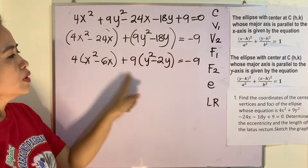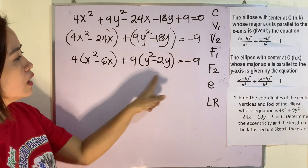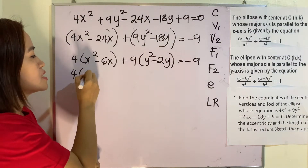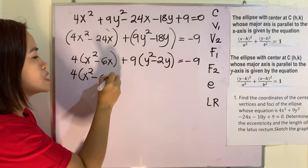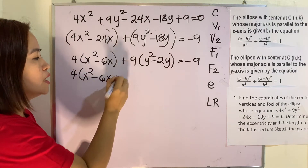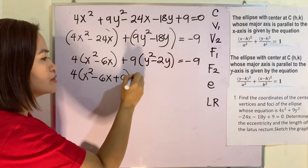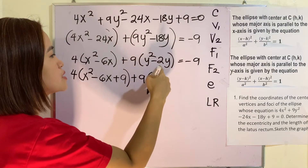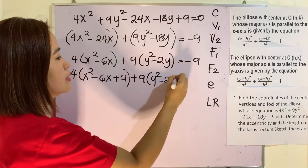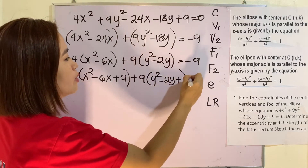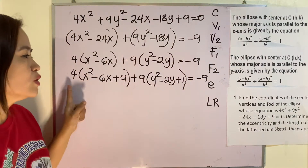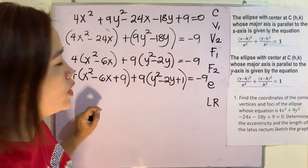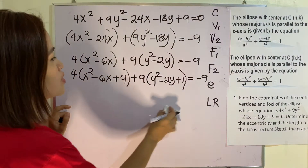We will be making this a perfect square. This is x squared minus 6x. Half of negative 6 is negative 3, and 3 squared is 9. Half of negative 2 is negative 1, and 1 squared is 1. What did we add here? We add 9 times 4, which is 36.